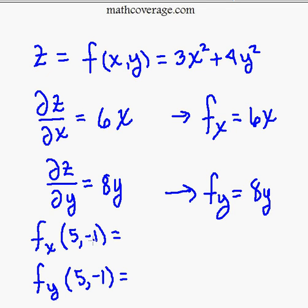So we want to take 5 and negative 1 and plug it in. Now, there's not a y here, so we're just going to take 5 and plug it in for x, and 6 times 5 is 30.